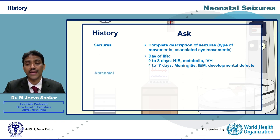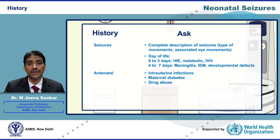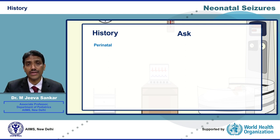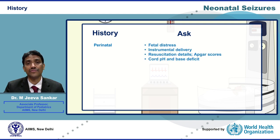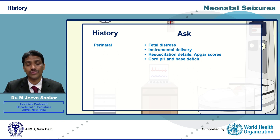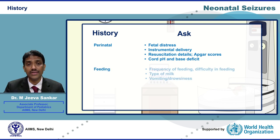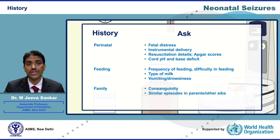The next important history is the antenatal history. We should enquire about any fever or rash in the first trimester, maternal diabetes, or maternal drug abuse. Given that perinatal asphyxia is the most common etiology, an accurate perinatal history is a must. Specifically, one should ask for signs of fetal distress, use of forceps or vacuum for delivery, steps of resuscitation required, APGAR score, and cord pH and base deficit if available. Details of feeding and family history should also be obtained.